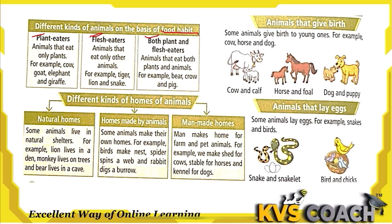Plant eaters are those animals which only eat plants. For example, cow eats grass, and goat, elephant, and giraffe are also plant eaters. They eat grass, leaves, trees, and fruits.